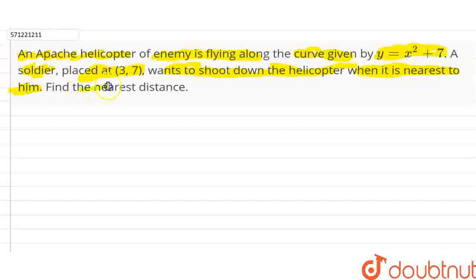So we have to find the nearest distance between the soldier and the helicopter. The curve at which the helicopter is flying is given to us as y equals x square plus 7. Now for this curve there will be a point P lying on this as x, y and y is x square plus 7.